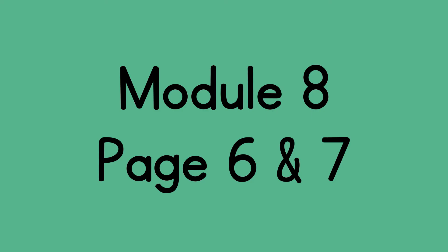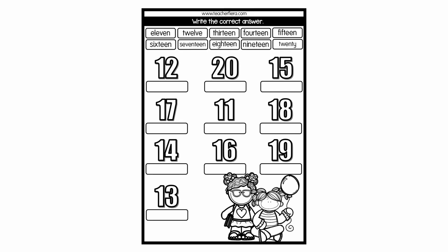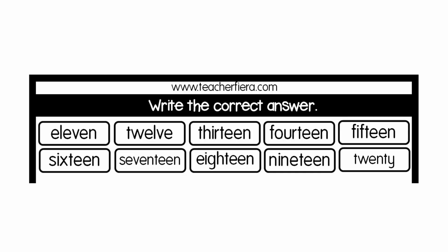Good. Now let's answer the last two pages of your module. Open module eight and turn to page six. Write the correct answer. You have the numbers: twelve, twenty, fifteen, seventeen, eleven, eighteen, fourteen, sixteen, nineteen, and thirteen. Write the numbers in words. You can look at the choices above to help you with the spelling.